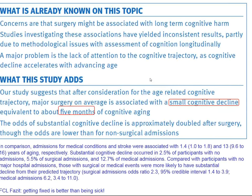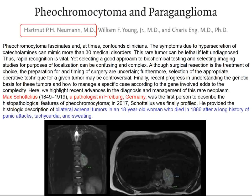Major surgical procedures — bypass surgery, hip replacement, chest surgery — place patients at risk of aging of about five months, which is acceptable. Medical problems are actually a greater risk, and stroke is obviously the greatest risk of all.